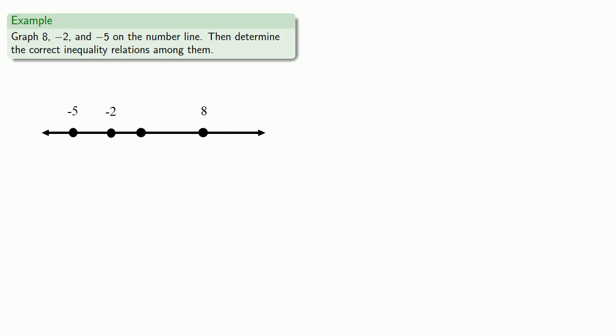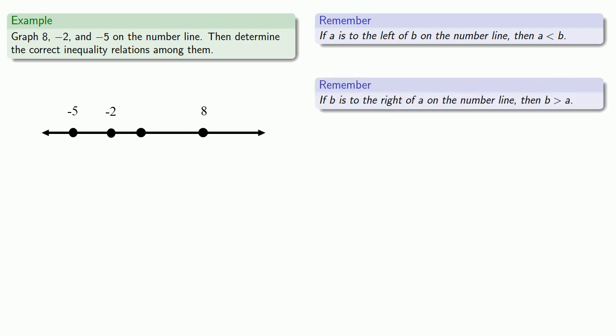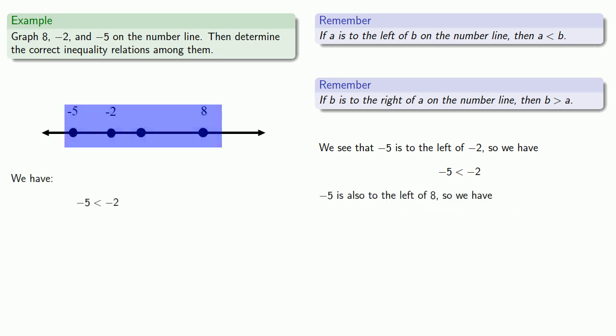It's helpful to remember the connection between the algebra and the geometry. If a is to the left of b, then a is less than b. If b is to the right of a, then b is greater than a. On our number line, we see that minus 5 is to the left of negative 2, so negative 5 is less than negative 2. Negative 5 is also to the left of 8, so we have negative 5 less than 8.